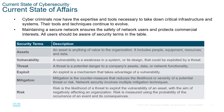You cannot get very far without a good understanding of these. Assets are things of value on your network. Vulnerability is a weakness in a system or design that can be exploited by a threat. Threats are a potential danger to a company's asset, data, or network. Exploits is a mechanism that takes advantage of a vulnerability. Mitigation is a countermeasure. Risk is the likelihood of a threat being realized or exploited.